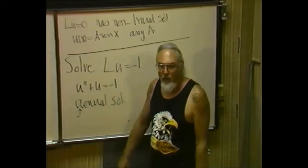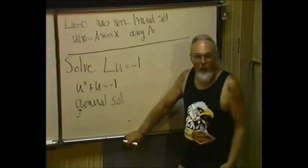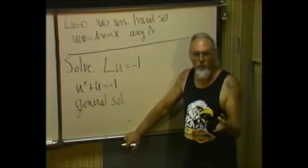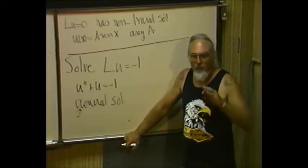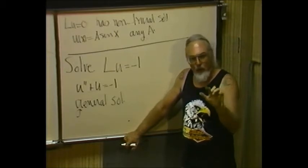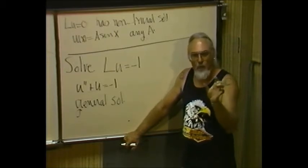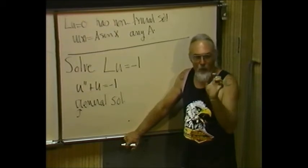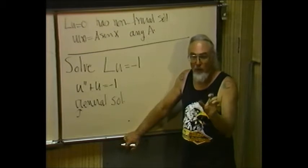If you try to use Green's function, your Green's function turns out to be not defined. If you try to use Green's function, you have to come up with a U1 and a U2. And what will happen is, your U1 and U2 will be dependent, and your Wronskian will be 0, and your Green's function will not be defined.